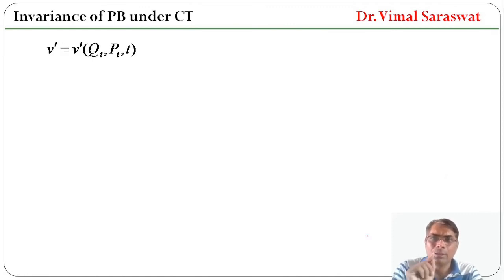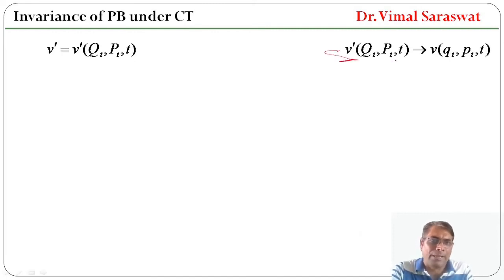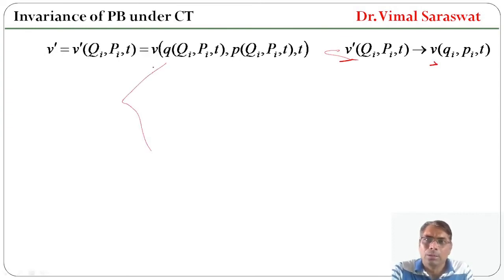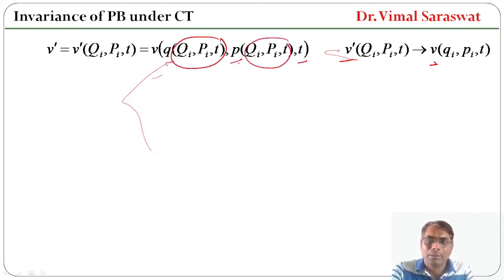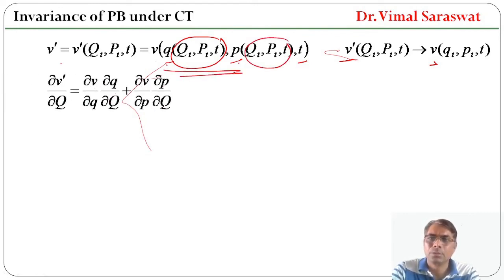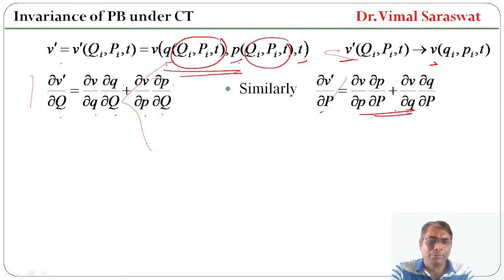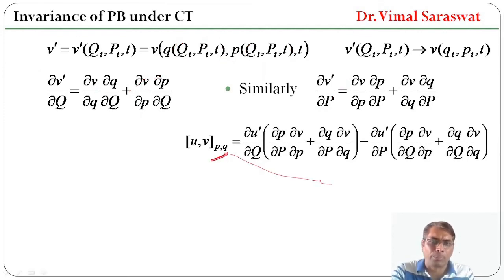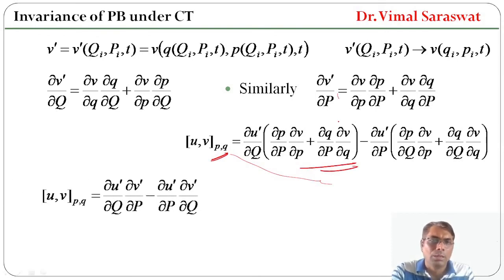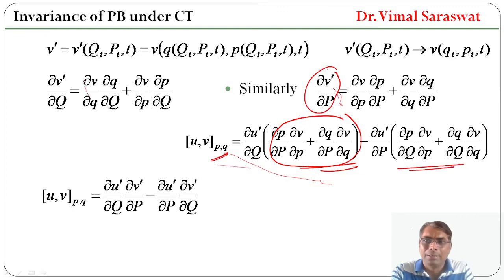Since v_dash is the function of capital Q_i, capital P_i, and t, we want to get the transformation from v_dash to v. So this equals v, where v is the function of small q, small p, and t, with q and p each as functions of Q and P. So v_dash equals this composite expression. Now del v_dash / del Q equals del v / del q · del q / del Q plus del v / del p · del p / del Q. Similarly, del v_dash / del P equals del v / del q · del q / del P plus del v / del p · del p / del P.